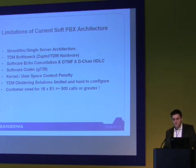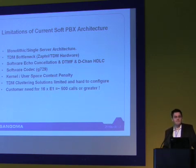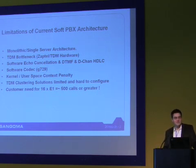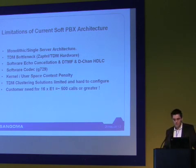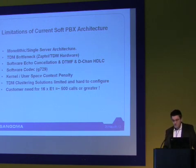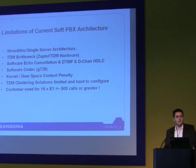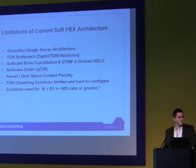Another one that not too many people talk about is the kernel context penalty. That is quite important, especially when you're trying to push through a barrier of over 250 calls on a single system — the kernel context penalty really comes into play. TDM clustering solutions are limited or hard to configure. It gets pretty complicated in configuration files trying to cluster multiple Asterisk boxes. We think we have a pretty easy way of clustering Asterisk boxes now.